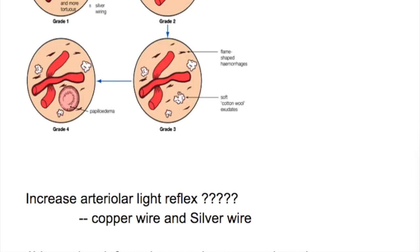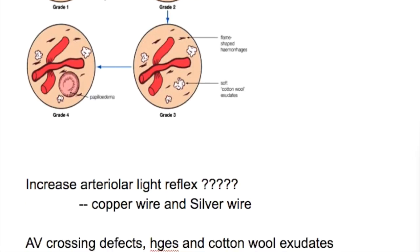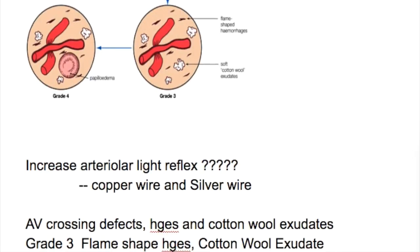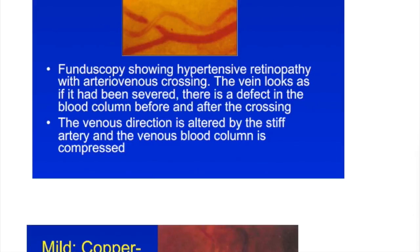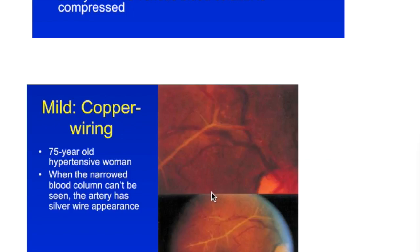In grade three we have flame-shaped hemorrhages and cotton wool exudates, and grade four is optic disc edema. This is AV nicking — the arterial wall direction is changed, the venous blood column is compressed — and here is the copper wiring and silver wiring.